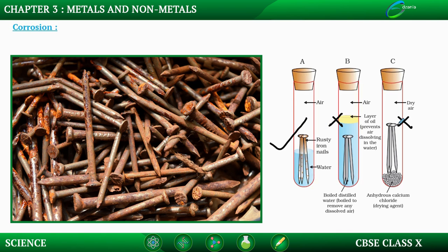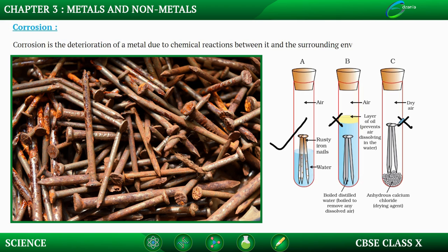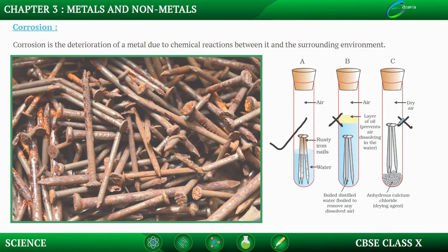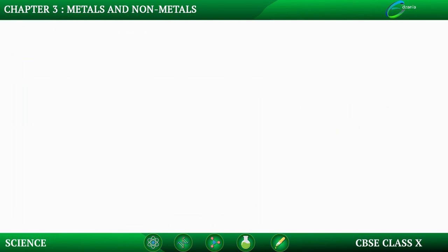We can say that iron when it comes in contact with water becomes rusty. Corrosion is defined as the deterioration of metal due to chemical reactions between it and the surrounding environment. Now how do we prevent metals from getting corroded? Let us look at the prevention of corrosion.